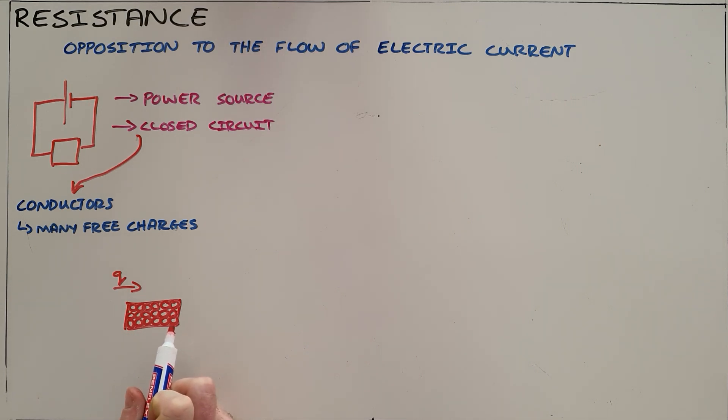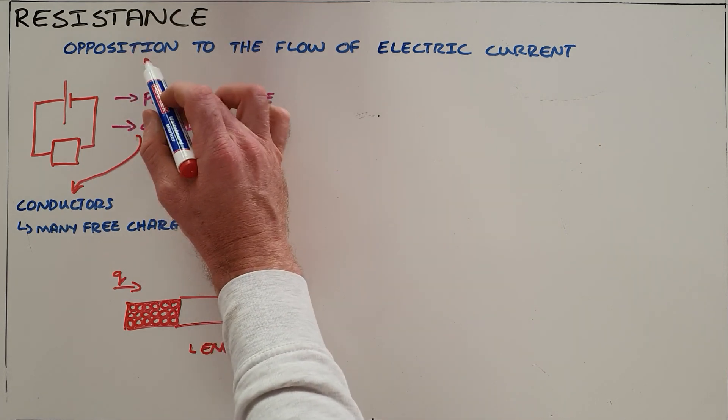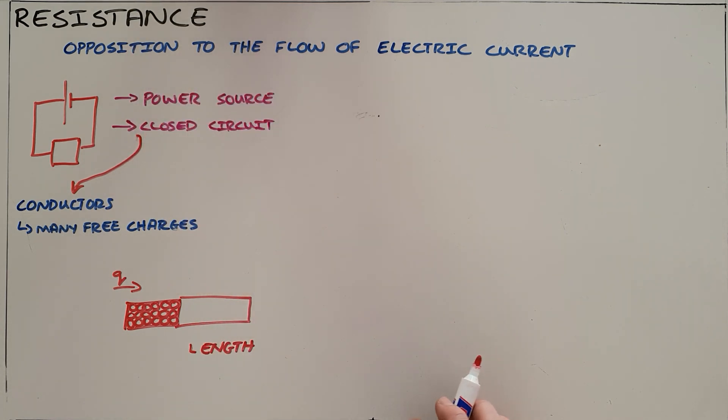There are a number of factors that affect the ease with which they can move through or the amount of opposition. The first one is length. If a resistor is longer, it makes the path that a charge carrier needs to move through longer and therefore more difficult, creating more opposition and more resistance.